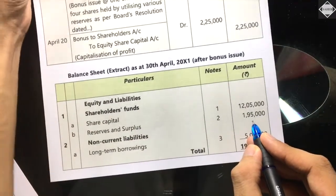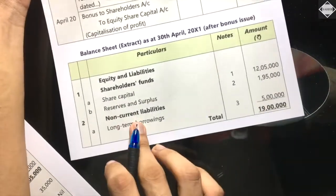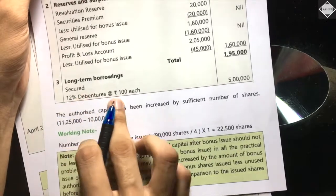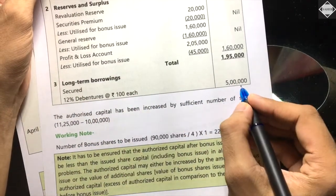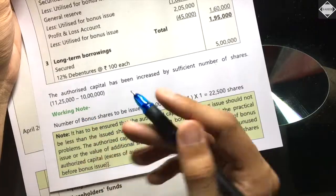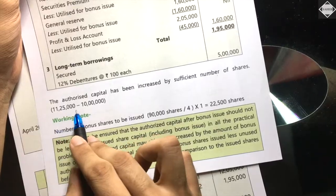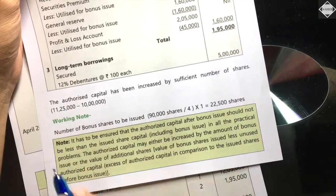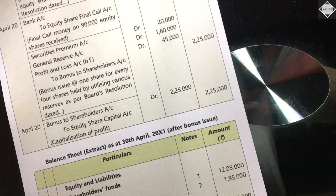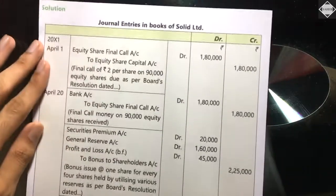Non-Current Liabilities remain as is — no change. Long-Term Borrowings: secured 12% debentures — ₹5,00,000 (same as before). Remember to write the note that authorized capital has been increased by sufficient shares — ₹11,25,000 minus ₹10,00,000. Notes will be uploaded to the Telegram channel. That's it for this video — see you in the next one!